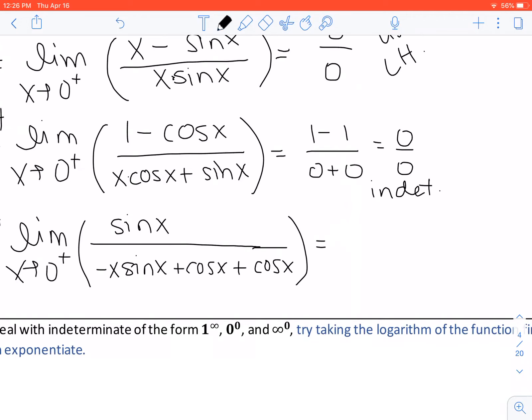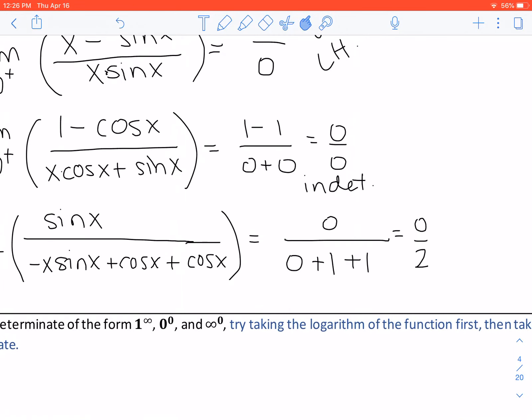And then evaluating this as X is approaching 0, so sine of 0 is 0. Again, 0 from the right. Then we have negative 0 times 0, which is 0, plus cosine of 0 from the right is 1, and another one. So for this we get 0 over 2, which is not indeterminate. This just simplifies to 0.